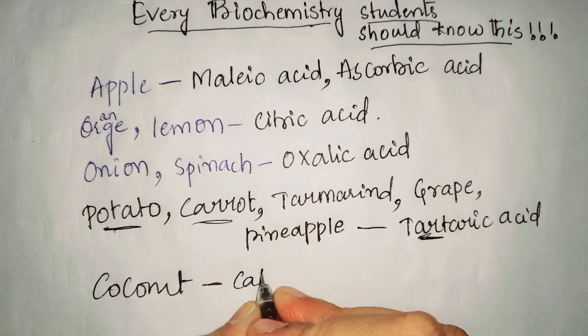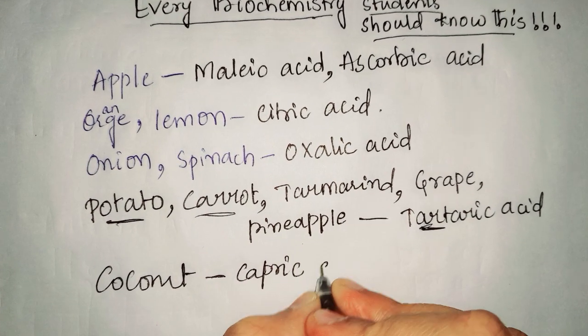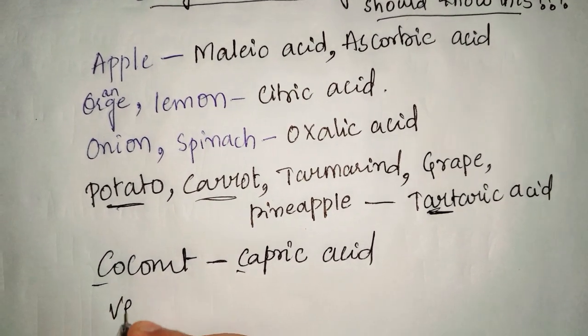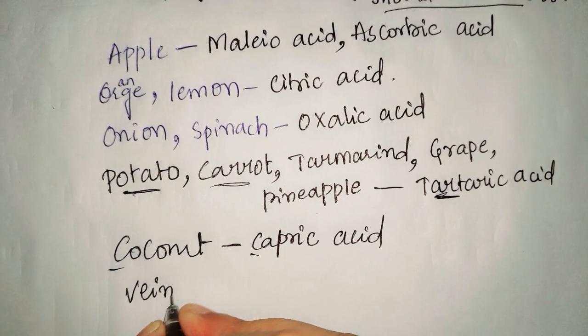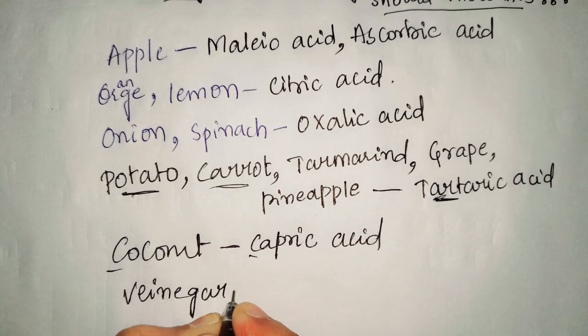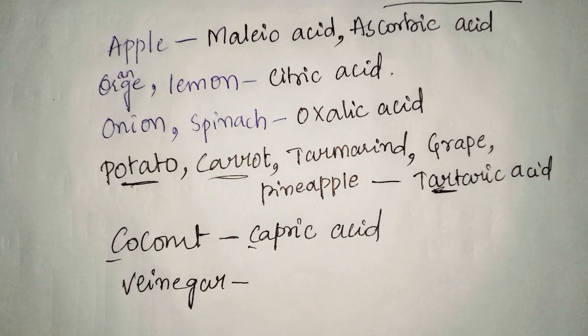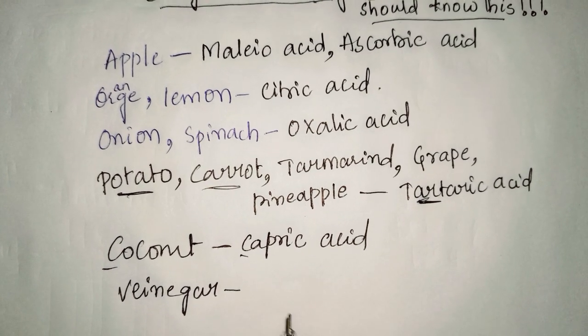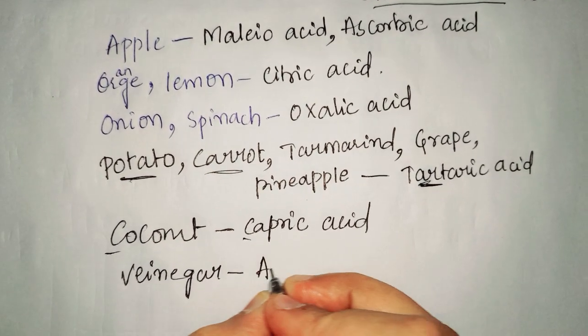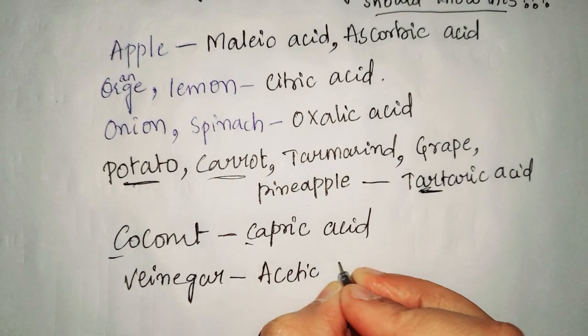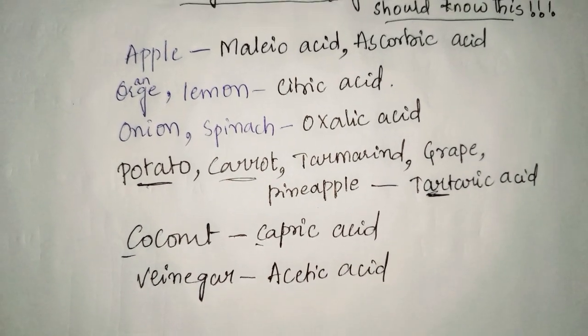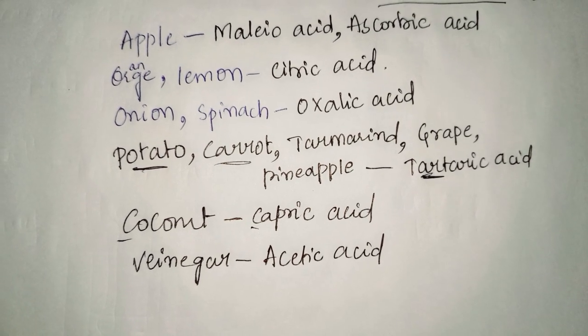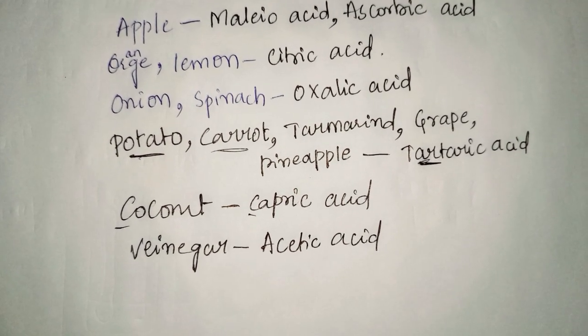So here it includes capric acid - C for coconut, C for capric acid. Vinegar - raise your hand if you eat fried rice constantly as your favorite. So vinegar is acetic acid which is used in fried rice. They use it to spice up and also to lower some spices when needed, along with lemon.